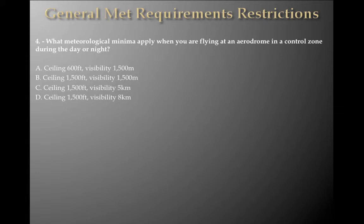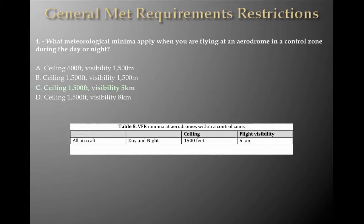What meteorological minima apply when flying at an aerodrome in a control zone during the day or night? Options: A — ceiling 600 feet, visibility 1,500 metres; B — ceiling 1,500 feet, visibility 1,500 metres; C — ceiling 1,000 feet, visibility 5K; D — ceiling 1,500 feet, visibility 8K. These are the horrible questions you get on the exam. The answer is B — ceiling of 1,500 feet, visibility of 5K — all aircraft day or night within an aerodrome within the control zone.